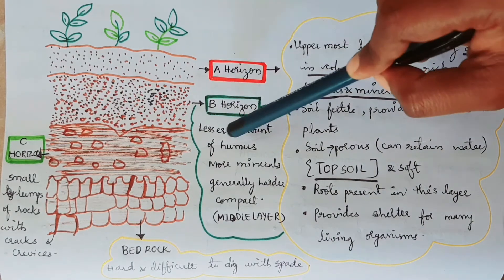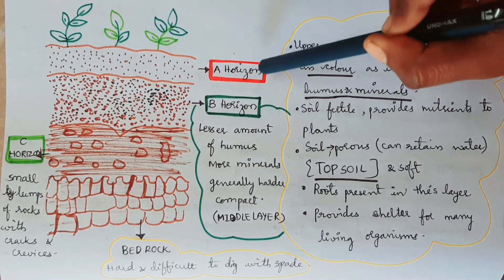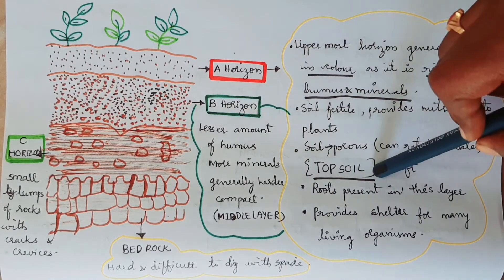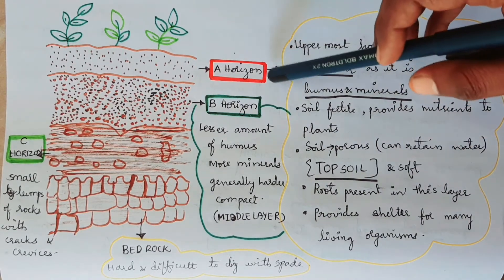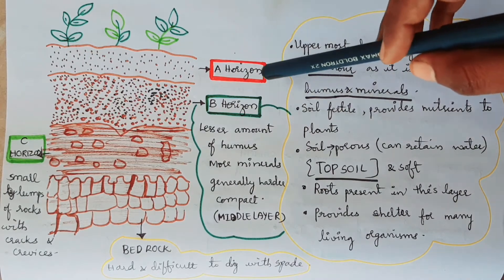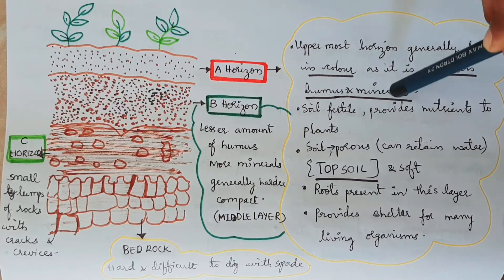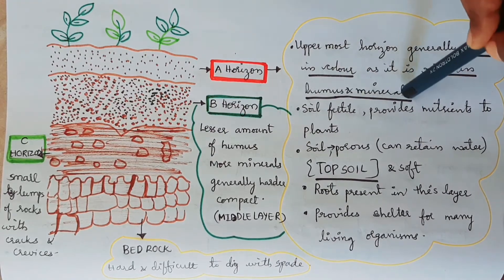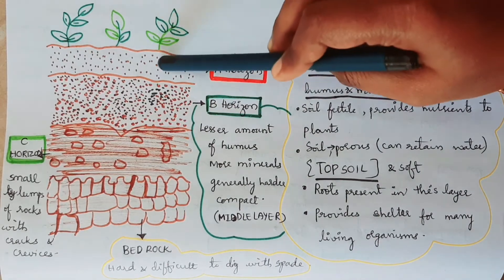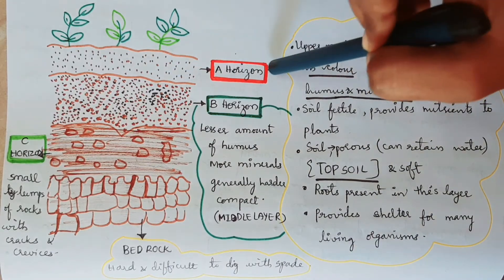Now we will look at each horizon in detail. Let's start with A-horizon. A-horizon is the topsoil — it is the uppermost layer. This layer is dark and rich in humus and minerals. Humus and minerals are very important in this layer. There are also roots of plants and many living organisms in the A-horizon.